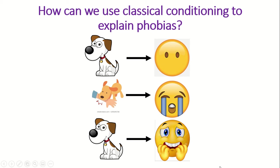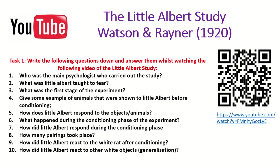We're going to look at that in more detail when we look at the key study. I'm going to show you a YouTube clip of the Little Albert study. You can either keep this video on, click on the link on the slide, or use the QR code. Before you watch the study, write down questions 1 to 10 and answer them whilst watching. I'll show you the video once through, but please feel free to rewind the clip using the link if needed. Pause the video now, write down the questions, then press play when you're ready.